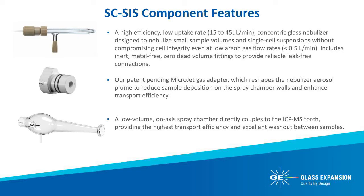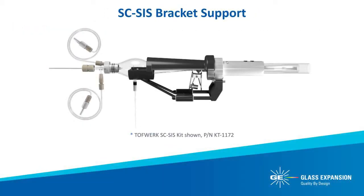Last but not least is our low volume on-axis spray chamber, which directly couples to the ICP torch, providing the highest transport efficiency and excellent washout between samples. In addition to high performance, it is also important to provide a simple and reliable means of installation, ensuring that the single cell sample introduction system is properly aligned and supported on each instrument.